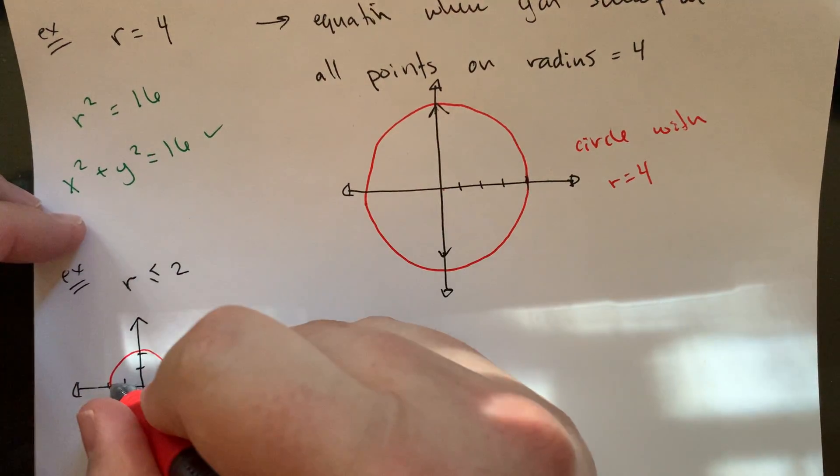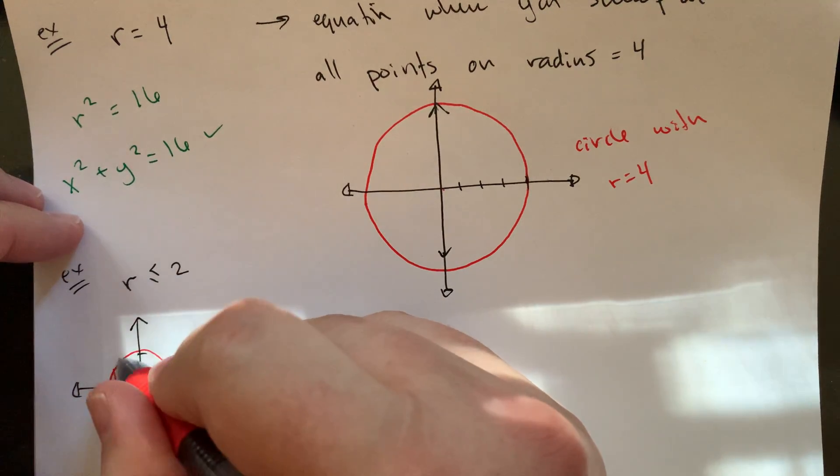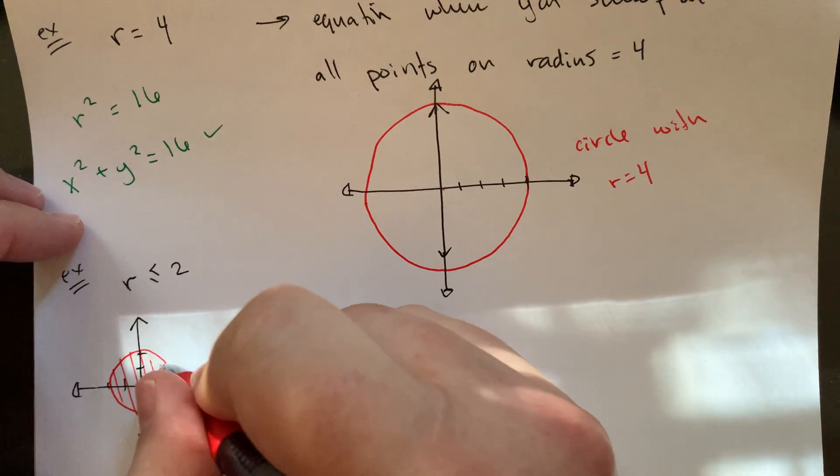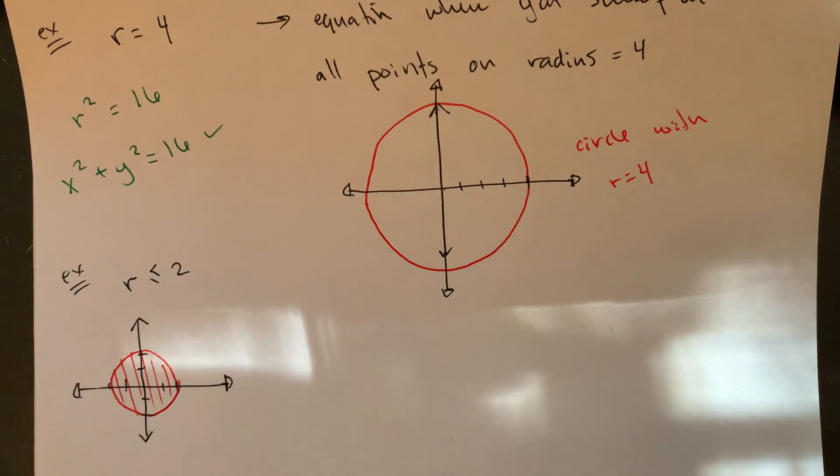But you're also covering, if it's less than or equal to two, you're also covering all of the interior of that circle. So if your radius is less than or equal to, you would be sort of filling in and sweeping out everything that's radius two or less than that, anything that's interior.